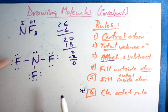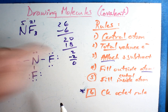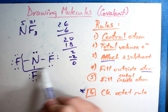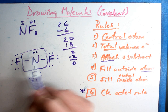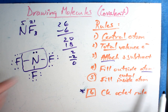Check the octet rule. Each fluorine: two, four, six, eight - full. All three fluorines are full. Nitrogen: two, four, six, eight - full. Everybody satisfies the octet rule. That's what the completed picture of NF3 looks like.